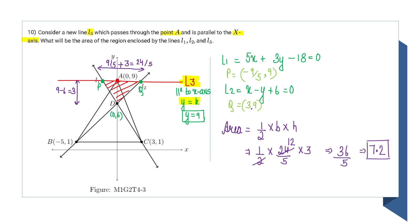Since this is parallel to the x-axis, my y-coordinate will be constant. Since it passes through point A, that will be equal to 9. So y = 9 will be the equation of L3. Since I know the equations of all three lines L1, L2 from question 8, I can get the intersection points P and Q very easily.